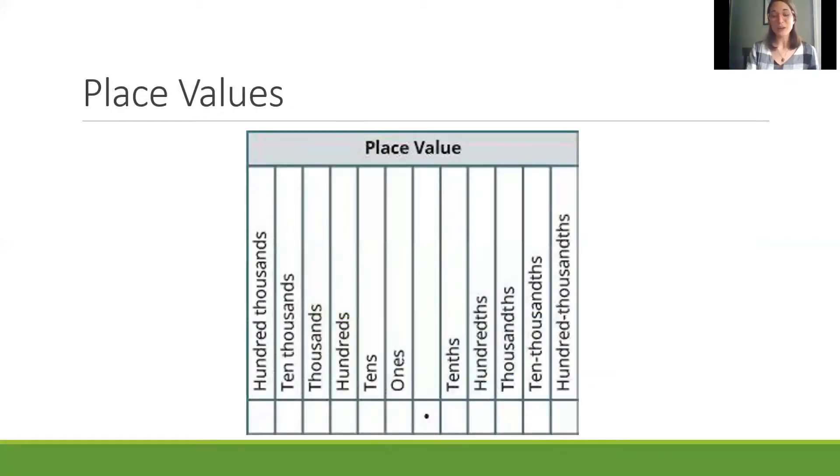Place values are also important and in fact we just put out a video on this as well for the Helms Academy. So you can take a look here and see all the different place values from hundred thousands to the ones and then over on the other side of the decimal from the tenths to the hundred thousandths. All of these are the different places where a number could fall and it's important to know a bit about the place value chart here so that on the left side you'll see all the bigger numbers and on the right side you see all the smaller numbers. So the further left you go the bigger the number is and the further right you go the smaller the number is.